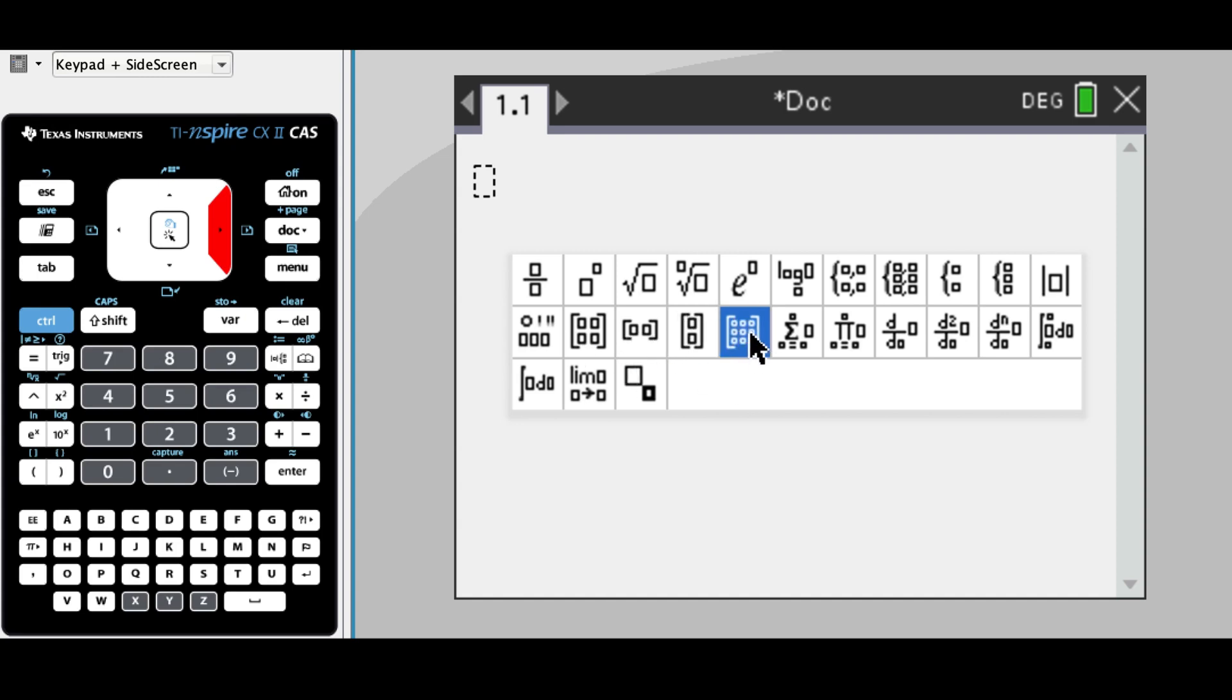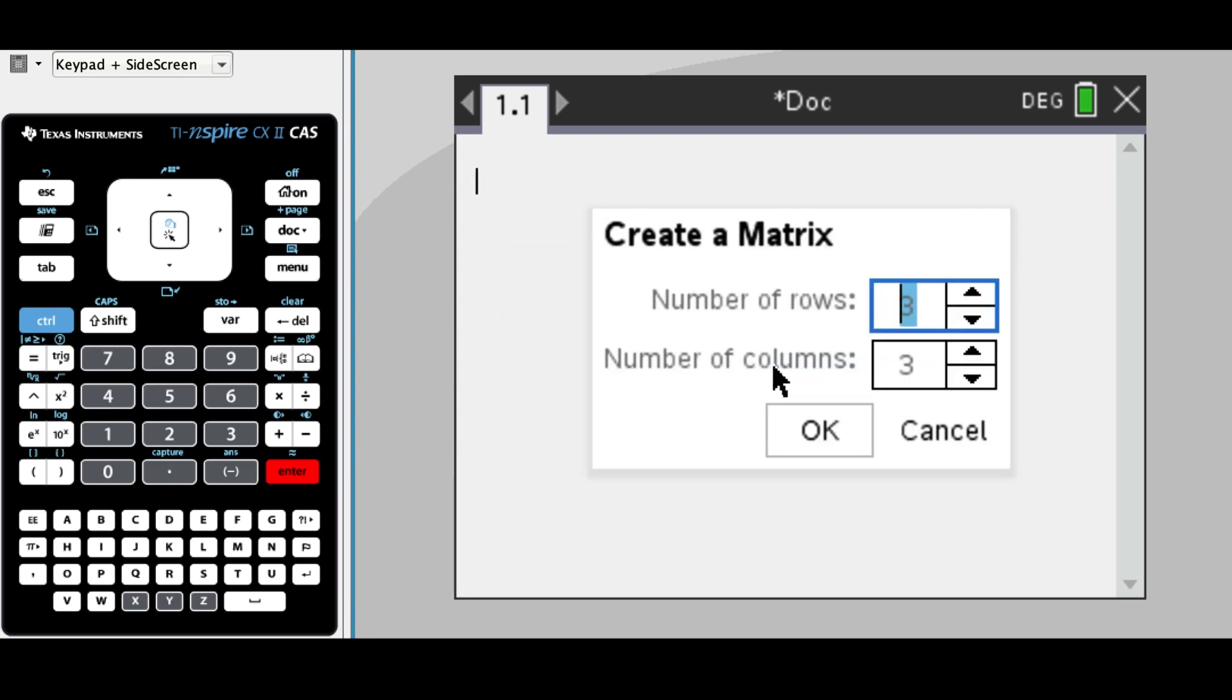The fourth option is a custom matrix, and we're going to be using this button quite often because it lets us enter the number of rows and the number of columns that we want.